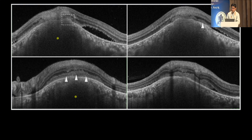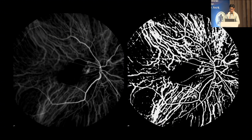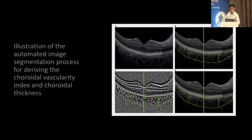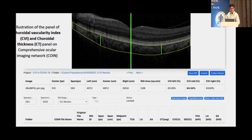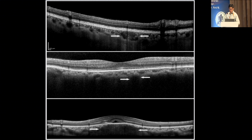Outer retinal infiltration is quite characteristic of a TB granuloma — you will not see this in sarcoid granulomas. We are starting to quantify ICG images using third-party software — choroidal vascularity index — and using these parameters we can quantify the amount of inflammation in the choroid. The top panel shows TB with a large choroidal granuloma and intense yellow color. The bottom shows ICG with multiple round to oval lesions representing sarcoidosis. Another OCT shows a well-behaved sarcoid granuloma under the RPE without much bump.